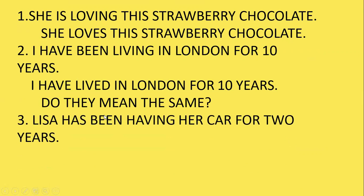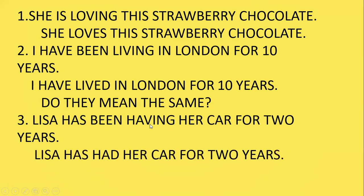Look at the next example: 'Lisa has been having her car for two years.' Look at the sentence structure — 'having.' This is present perfect continuous, but again you cannot add -ing with this stative verb. So which is the right tense here? 'Lisa has had her car for two years.' Better to go for present perfect tense.